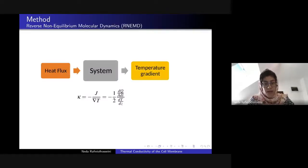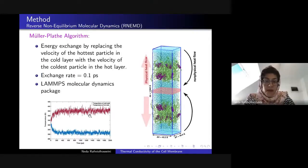I use a method, reverse non-equilibrium molecular dynamics. Why it is called reverse? Because actually in experiment we have a cause and an effect. The cause is usually a temperature gradient. We have a temperature gradient and as a result of that gradient we have a heat flux throughout the system. But here we do the reverse: we impose a heat flux to the system and we calculate or actually obtain a temperature gradient that lets us calculate thermal conductivity using the Fourier formula.